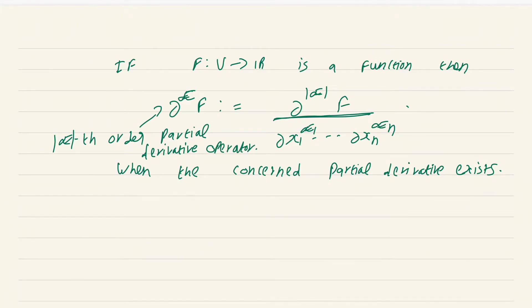Observe that the way we have defined partial derivatives using multi-indices, there is no way to express del^2 f / del x_2 del x_1. This is simply not possible, but this is not such a big deal because we will soon prove a theorem which says the order will not matter once you put a mild hypothesis on f. Before that, let me make a very important definition which is going to be used throughout this course: the definition of smoothness classes.